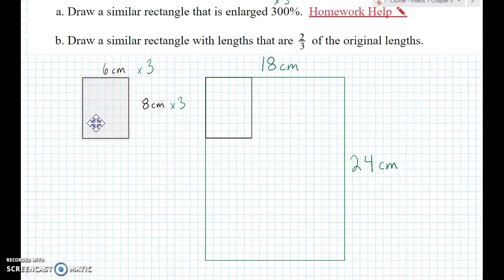Okay, let's make it smaller. So, let's do 2 thirds, a reduction of 2 thirds of the original length. Let's move my face. There we go. Draw a similar rectangle with lengths that are 2 thirds of the original lengths. So, let's make this smaller. Let's take 2 thirds of 6 and let's take 2 thirds of 8.